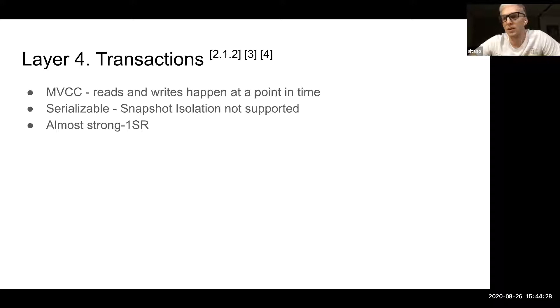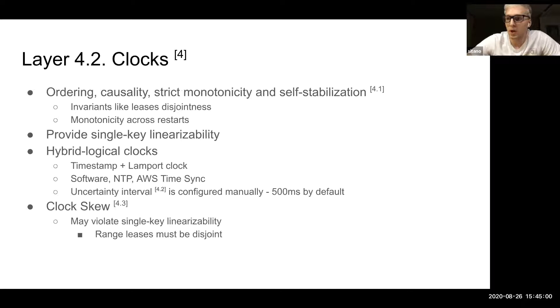The transactions in CockroachDB use MVCC and they use points in time to do its reads and writes. CockroachDB provides serializable isolation without snapshot isolation, and they discuss why they removed support for snapshot isolation in the conclusion. They are almost strong 1SR consistency model. So the CockroachDB concurrency control is mostly optimistic.